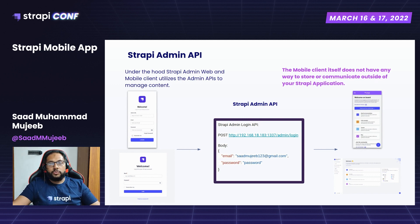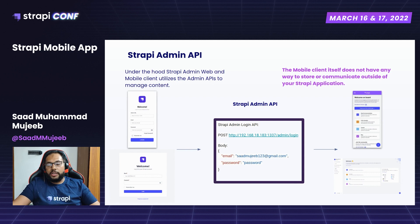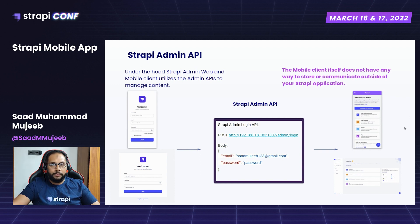As an example, for the admin API the login endpoint is `/admin/login` with a request body — exactly the same as on the web, and the same for mobile. One important thing to mention: the mobile client is totally dependent on your hosted version of Strapi. There is no data collected locally or on any other service. To use the mobile client you provide your Strapi admin URL, email, and password on the login form.